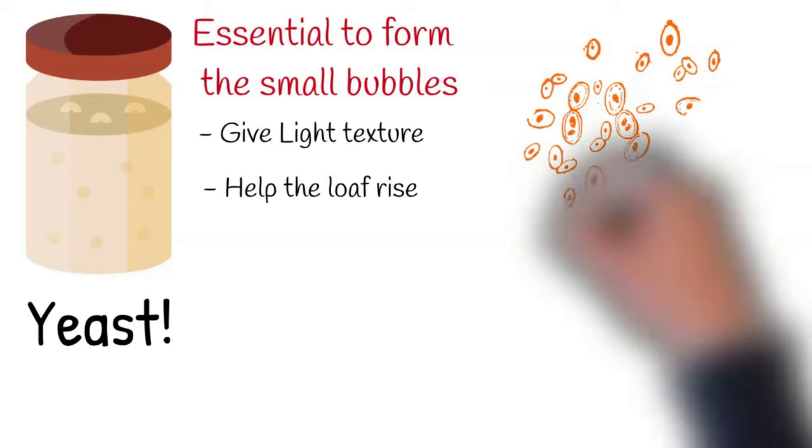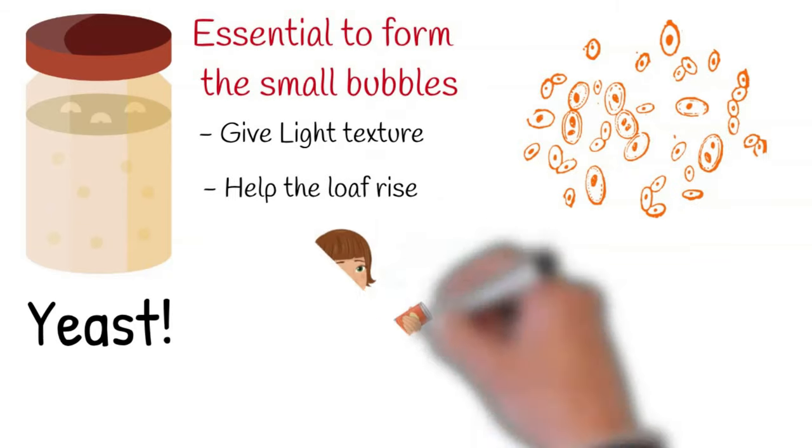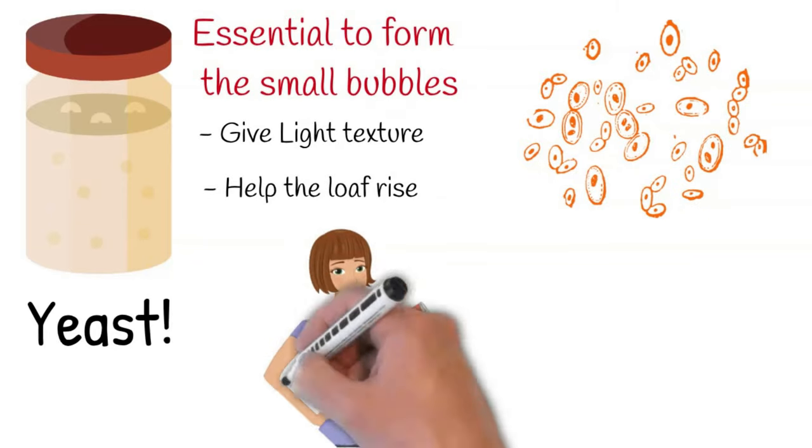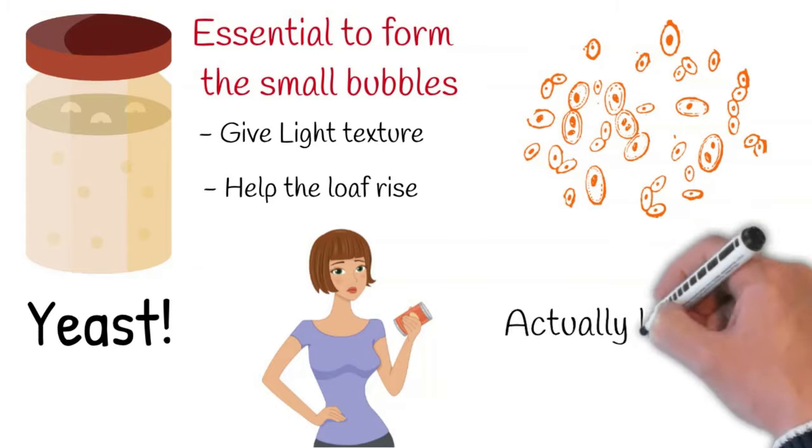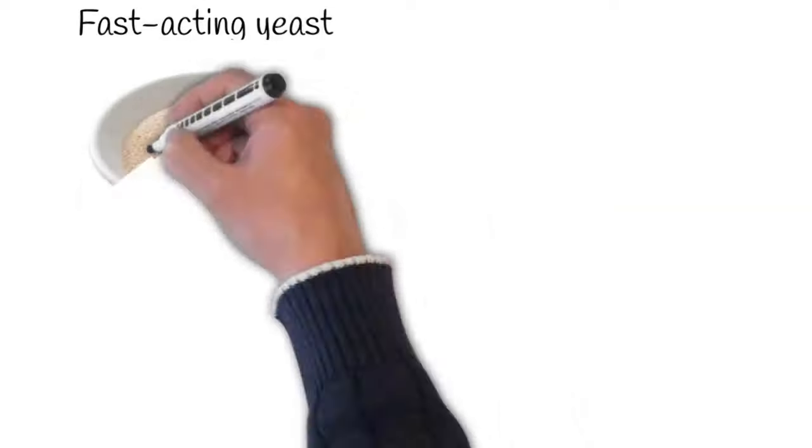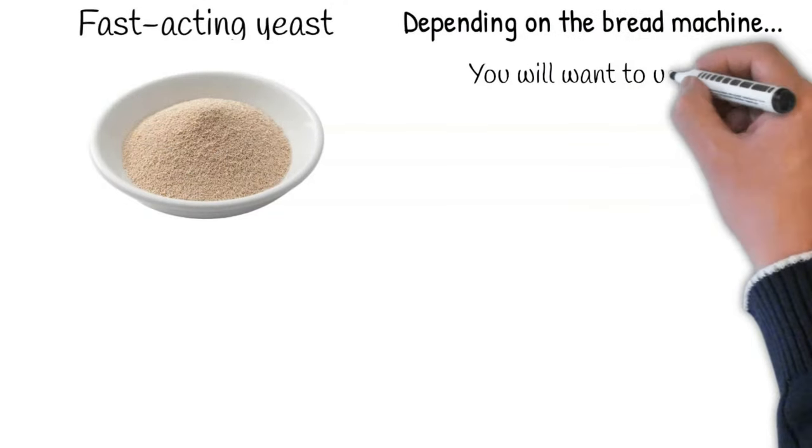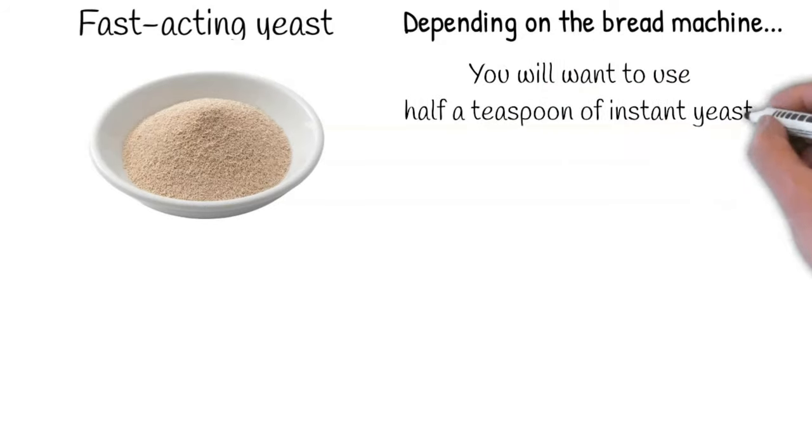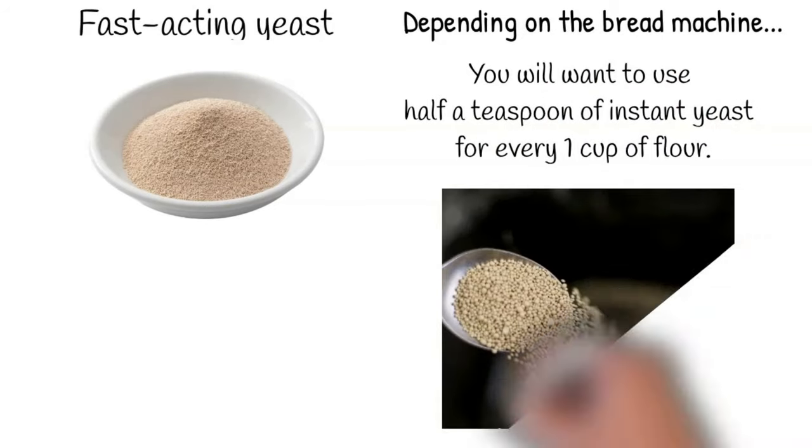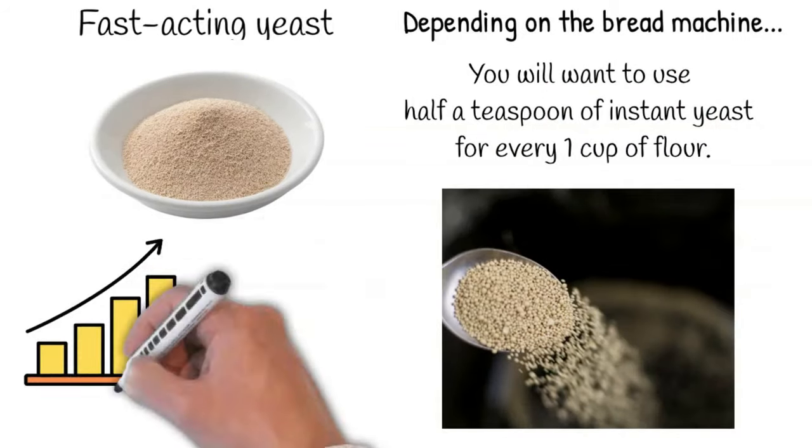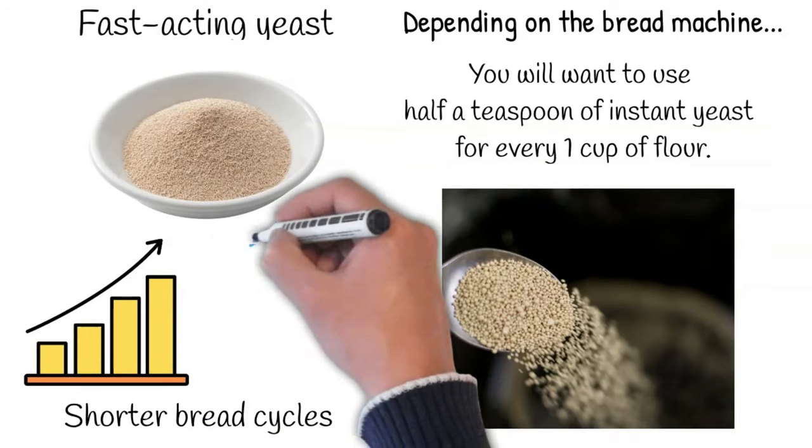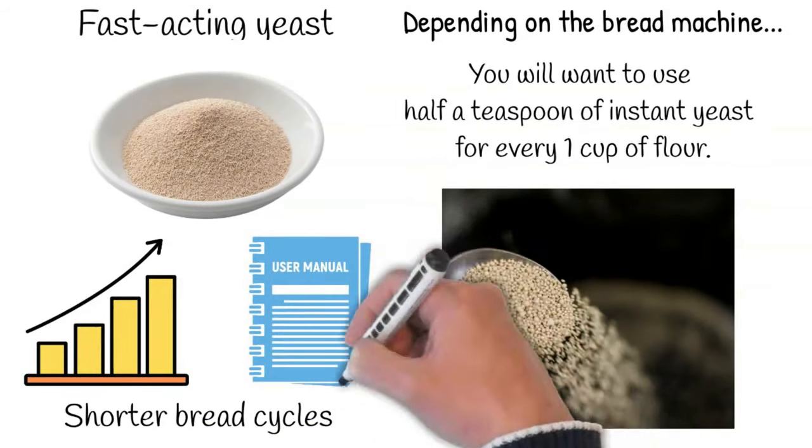Yeast is a living organism, so check the date on the packet and make sure you use yeast that is actually live and as fresh as possible. Fast-acting yeast is best for bread machines. Depending on the bread machine, you will want to use half a teaspoon of instant yeast for every one cup of flour. You may need to increase this amount for shorter bread cycles, according to manufacturer guidelines.